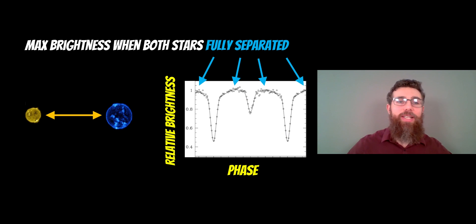Now, when the two stars are fully separated, you're going to get the maximum brightness of the total light that we are measuring because you've got both stars contributing all of their light. We get the maximum brightness when the stars are fully separated as viewed from Earth.